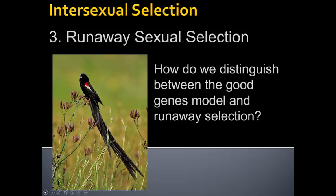Sometimes runaway selection is so extreme that it puts other areas of male fitness at risk. This is an example in the widow bird, where the tail is three or four times the length of the body and females really prefer males with longer tails. Experiments have taken males with short tails, artificially enhanced them with fake tails so that females will mate with them, and the offspring are just as healthy and strong. There doesn't seem to be any fitness benefit for females choosing males with really long tails, so it's not really a good genes scenario.